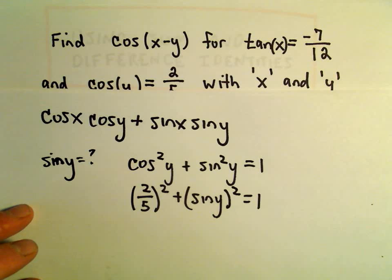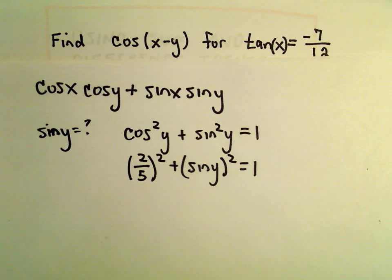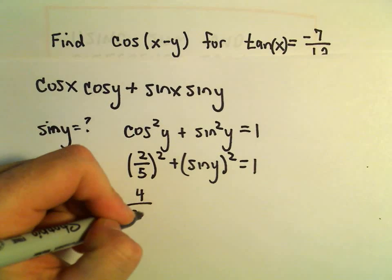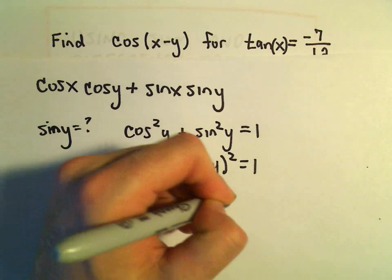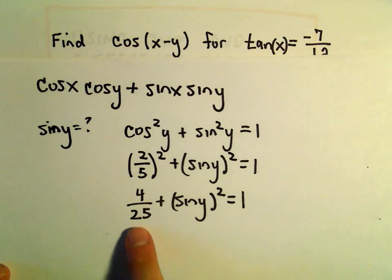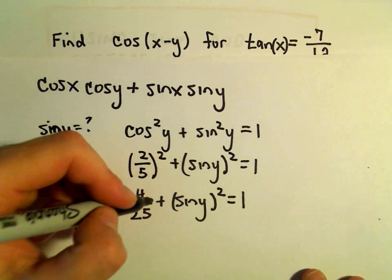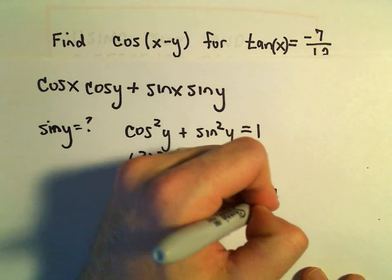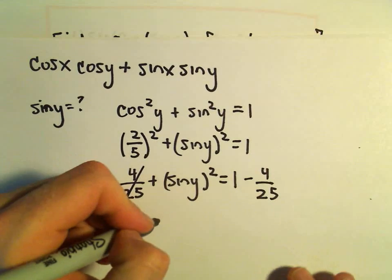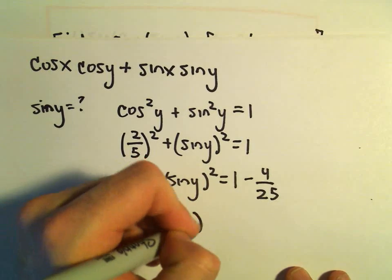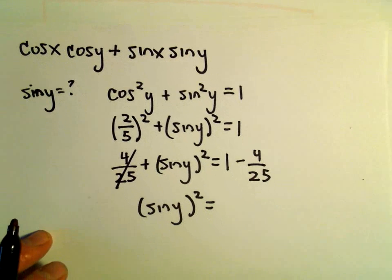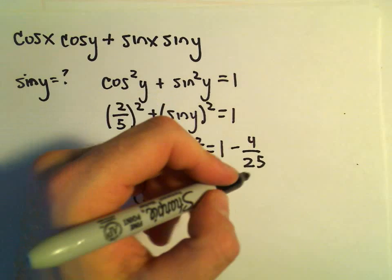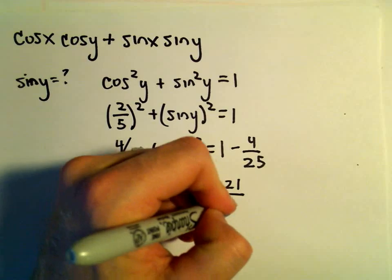So 2 fifths squared—that's 2 over 5 times 2 over 5—gives us 4 over 25 plus sine y squared equals 1. I can subtract 4 over 25 from both sides. That's 25 over 25, so 25 minus 4 will be 21 over 25.